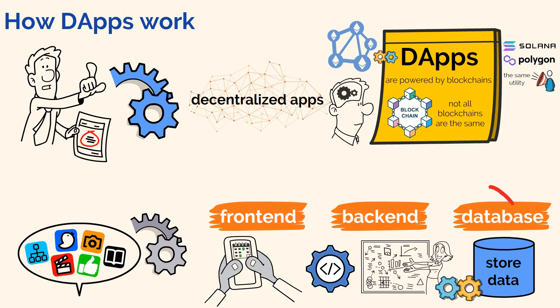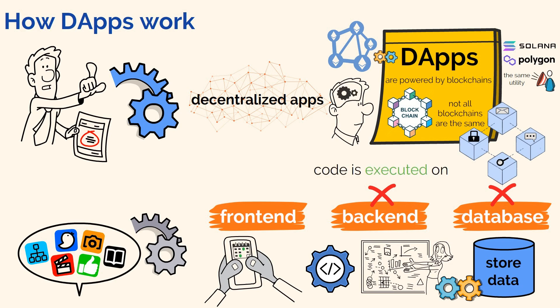However, instead of storing data on a pre-created database, all the data the dApp needs to operate is stored on the blockchain ledger instead. Also, unlike in a centralized app where the code is executed by the back-end, for decentralized apps, the code is executed on the blockchain itself.